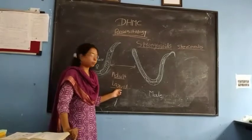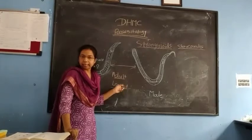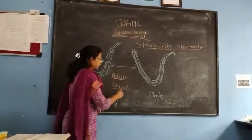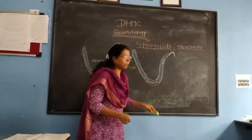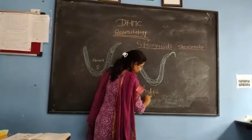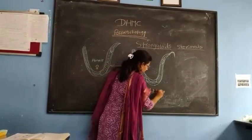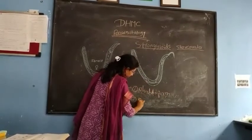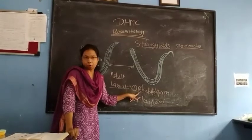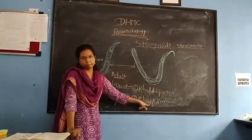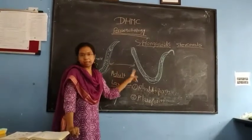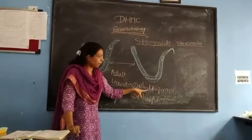In the larval form, there are again two types of larvae in the case of S. stercoralis. One is the rhabditiform larva and one is the filariform larva. So that part you have to remember — two types of larvae are there in S. stercoralis: rhabditiform form larva and filariform form larva.